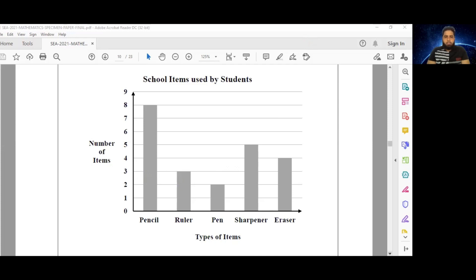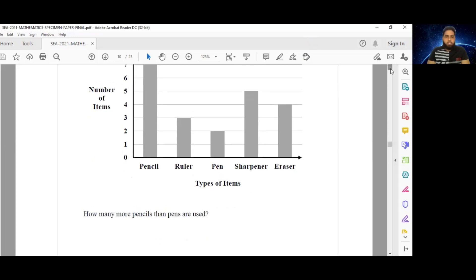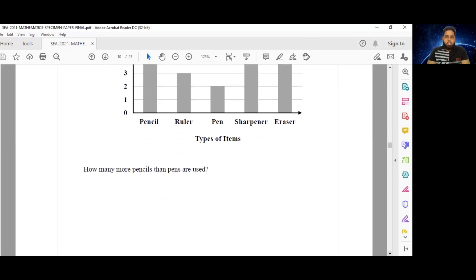Now, what does the question ask us? The question asks, how many more pencils than pens are used? So eight pencils are being used, and only two pens are being used. So all we have to do for this question is quite simply to say eight take away two is equal to six. So there are six more pencils being used than pens. All right, six more pencils are used than pens. And that would be our answer for this question.